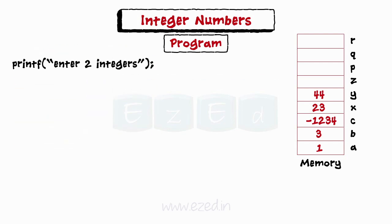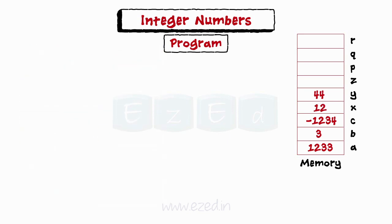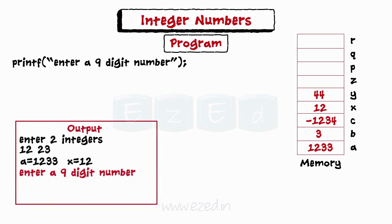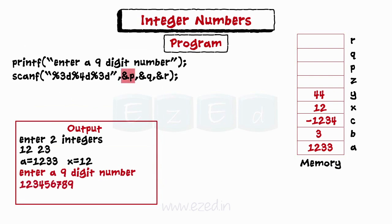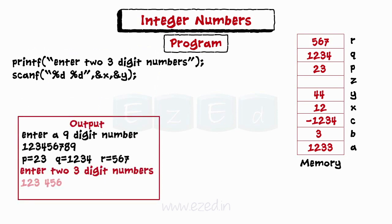Then we ask the user to enter two integers. The scanf line accepts input of two numbers. When the user enters 12 and 23, A is assigned L33 as it is carried forward from the previous scanf statement, and X is assigned 12. After which we again ask the user to enter a nine-digit number. The scanf line ignores the input as it was expecting three numbers; it assigns 23 from the previous scanf statement to P, and assigns the newly entered number to Q and R according to the widths. Finally we print them. We again ask the user to enter two three-digit numbers; when user enters 123456, X is assigned 89 which is carried forward from the previous scanf statement, and Y is assigned 123.